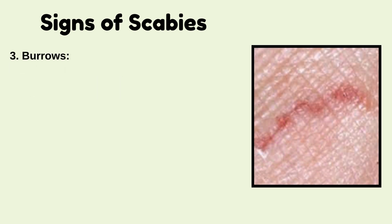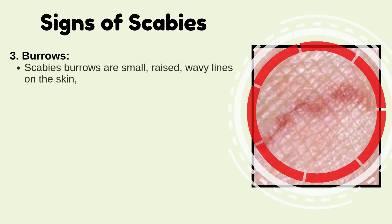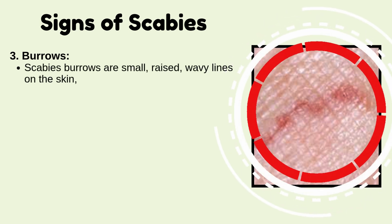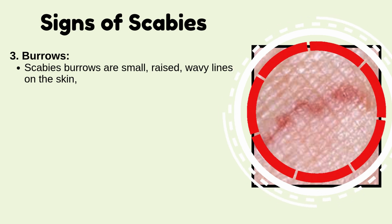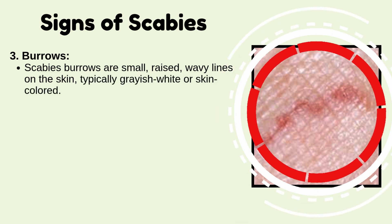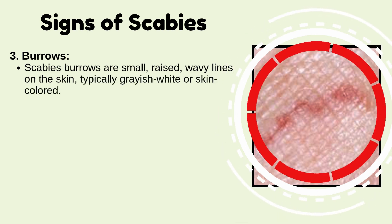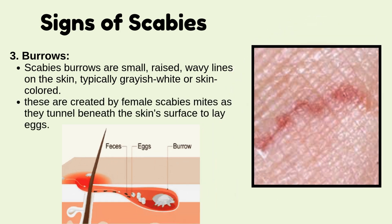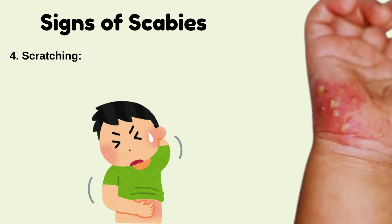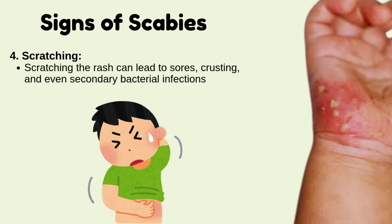Burrows of scabies: scabies burrows are small, raised, wavy lines on the skin. These burrows are typically grayish-white or skin-colored, created by female scabies mites as they tunnel beneath the skin surface to lay eggs. Scratching the rash can lead to sores, crusting, and even secondary bacterial infections.